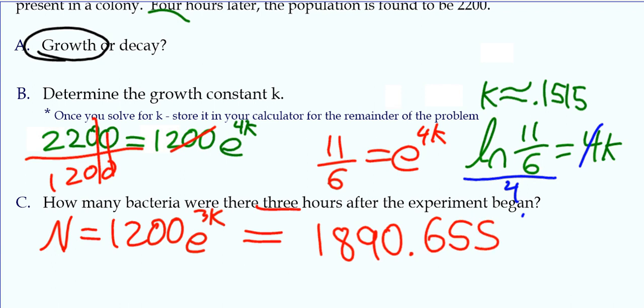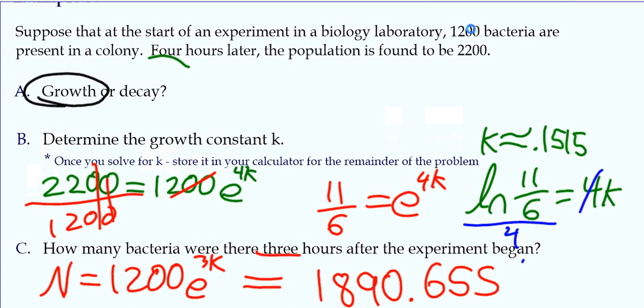Now, with all word problems, they should make sense. We know that we started with 1,200, and four hours later, there's 2,200. So three hours later, there should be somewhere between those numbers. Probably closer to the 2,200, because we're closer to four hours than we are at the beginning. That makes sense. We get almost 1,900. So the answer makes sense in context.